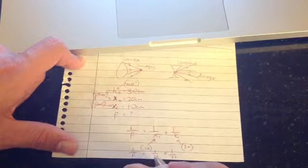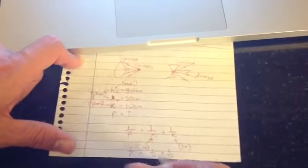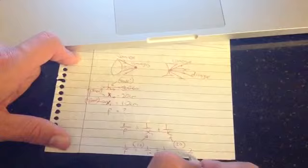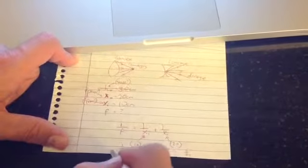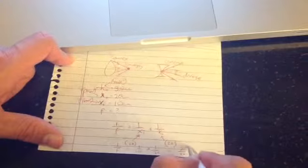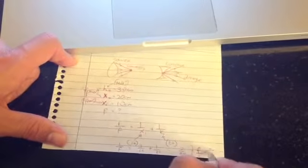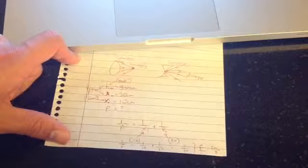So 1 over f equals 1 over 10 plus 1 over 20, which gives 3 over 20. So 1 over f equals 3 over 20. To find f, we flip it: f equals 20 over 3.